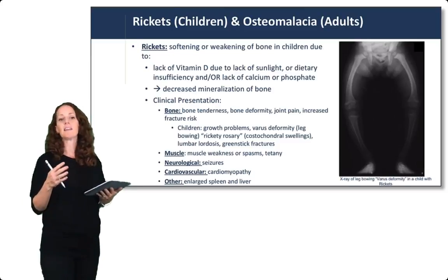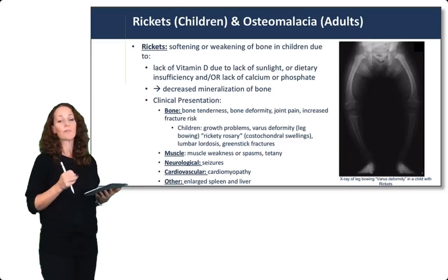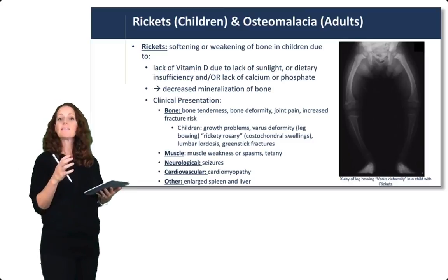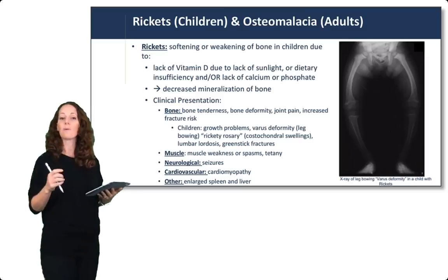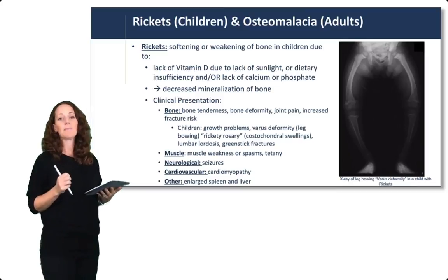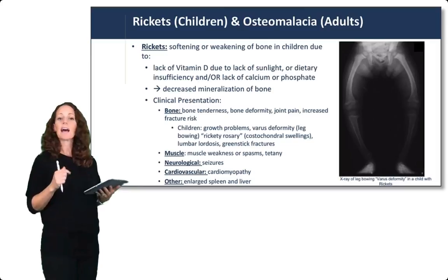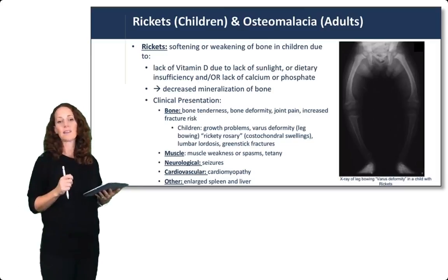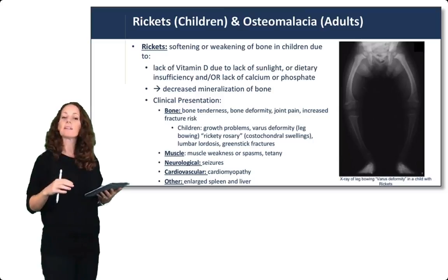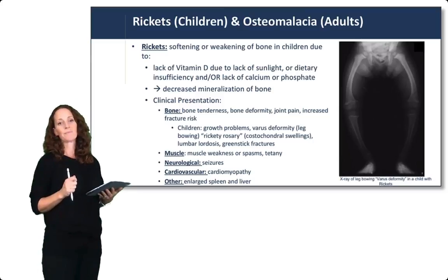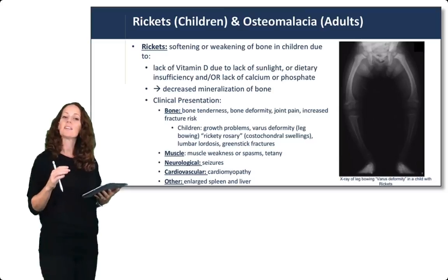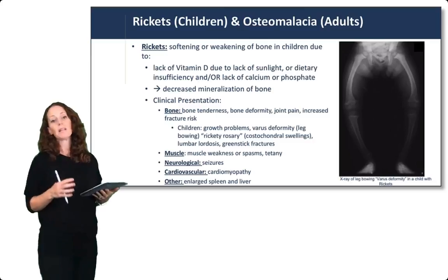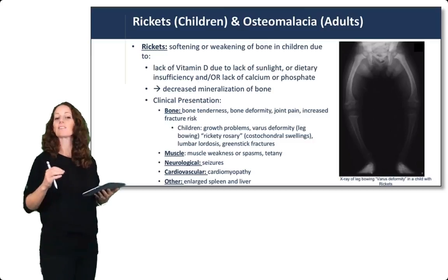Vitamin D deficiency can lead to rickets in children and osteomalacia in adults — a softening or weakening of bone due to lack of vitamin D, lack of sunlight, dietary insufficiency, or lack of calcium or phosphate. This leads to decreased mineralization of bone. The clinical presentation includes bone tenderness, deformity of bone, joint pain, and increased fracture risk.